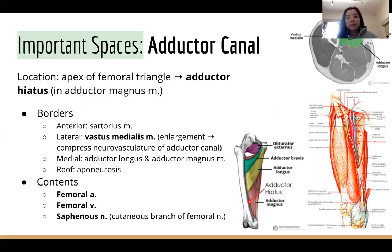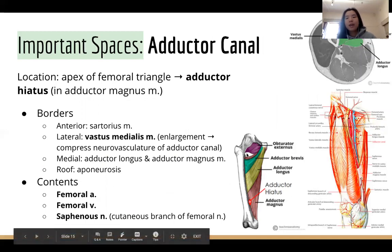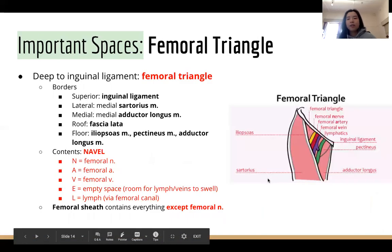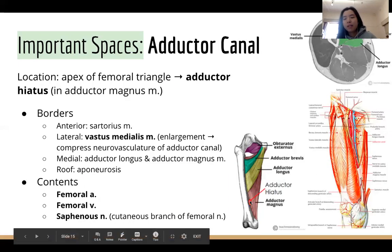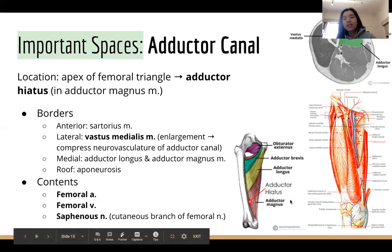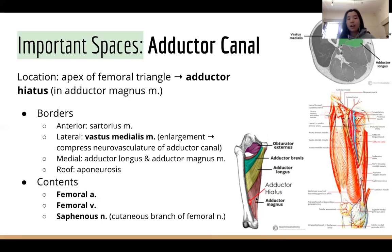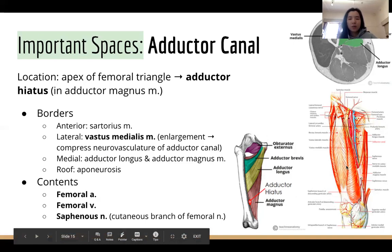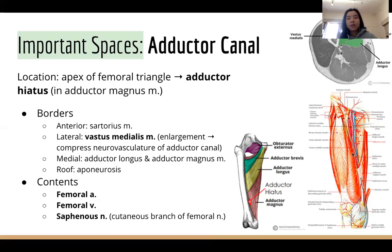The adductor canal is a bit lower down. The adductor magnus has a gap called the adductor hiatus, and a canal forms from the apex of the femoral triangle all the way to this hiatus. The borders anteriorly are the sartorius, laterally the vastus medialis, medially the adductor longus and adductor magnus, and the roof is the aponeurosis. It contains the femoral artery, femoral vein, and the saphenous nerve — a branch of the femoral nerve.